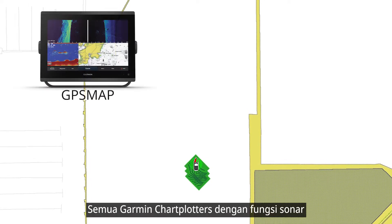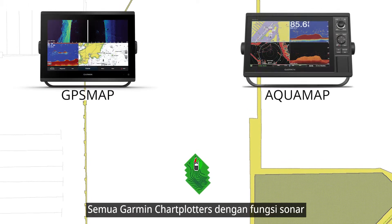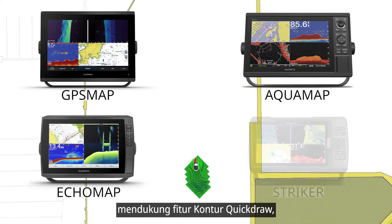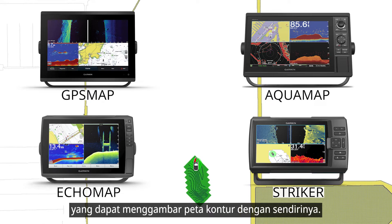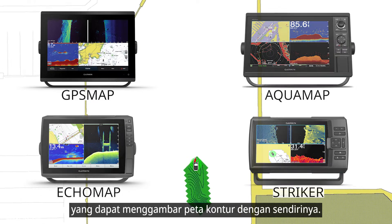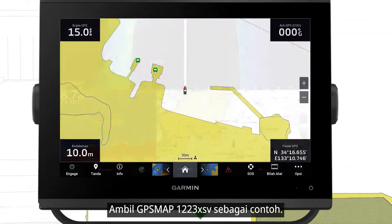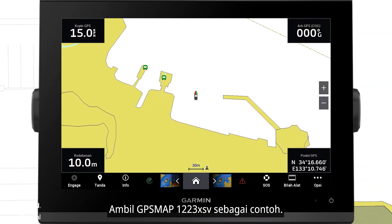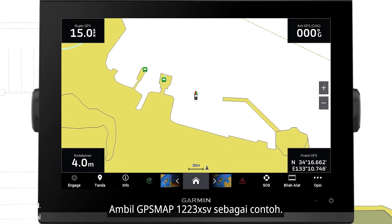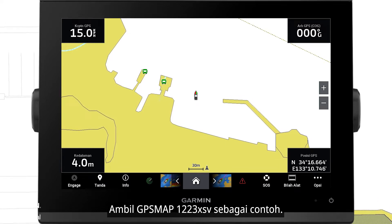All Garmin chartplotters with sonar function support the Quick Draw Contours feature, which can draw contour maps by itself. Take the GPS Map 1223XSV as an example.